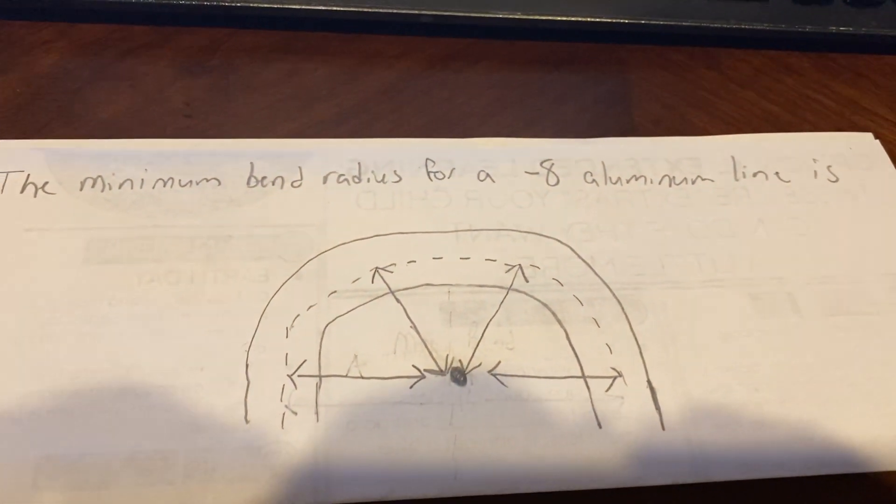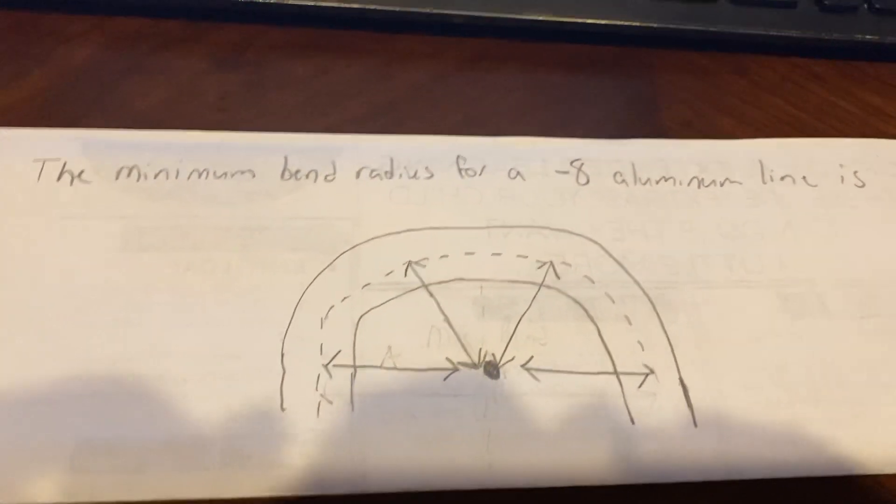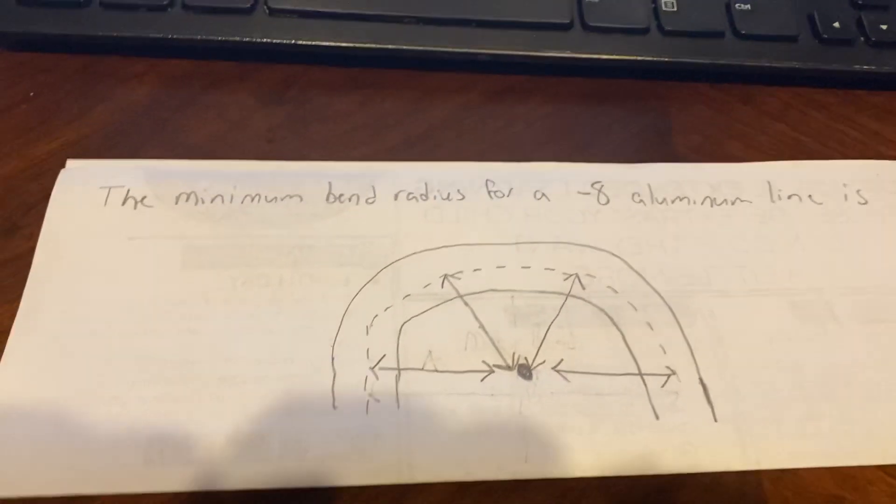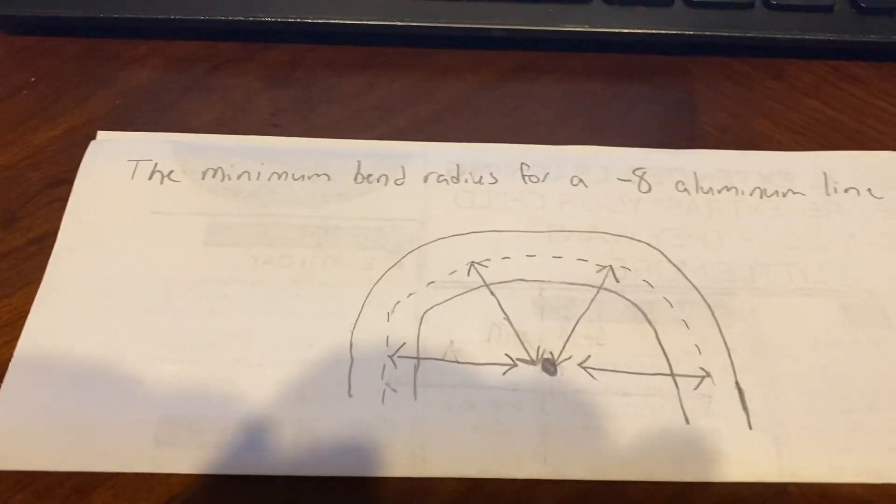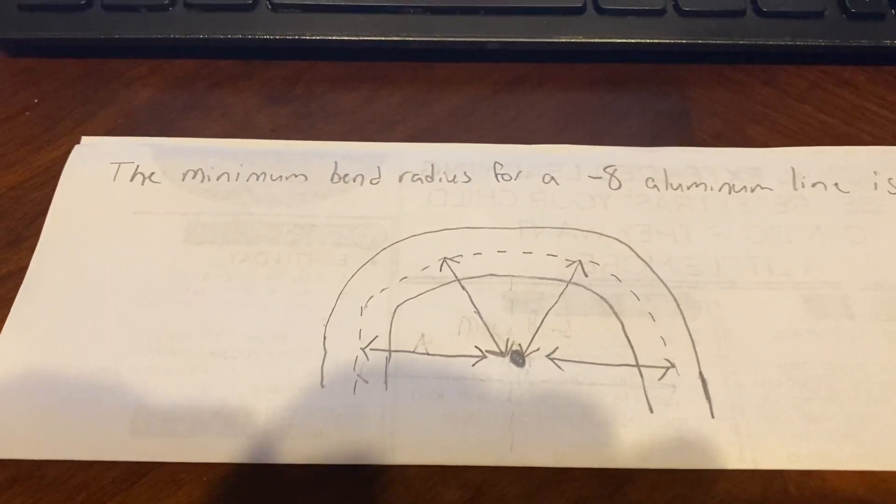It says the minimum bend radius for a dash 8 aluminum line. What this is telling us is if we bend an aluminum line and we get too tight of a bend, we could get kinks, we can get restriction of fluid flow, different problems like that could happen.